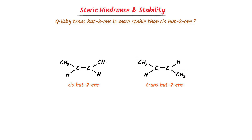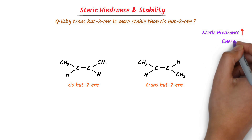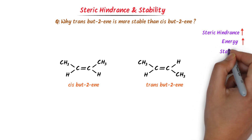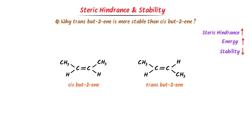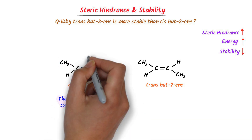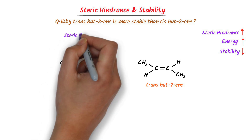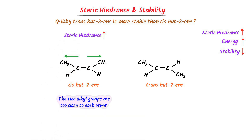Now listen carefully. If there is more steric hindrance, the energy of the molecule increases and the stability of the molecule decreases. In cis-but-2-ene, the distance between the two alkyl groups is less than the van der Waals radius, so there is more steric hindrance in this molecule. We know that more steric hindrance means less stability. Hence, it is a less stable molecule.